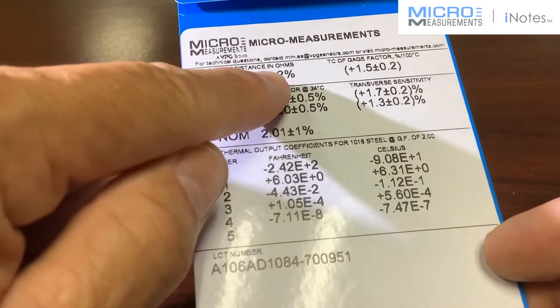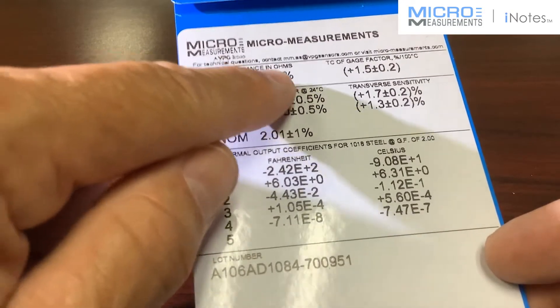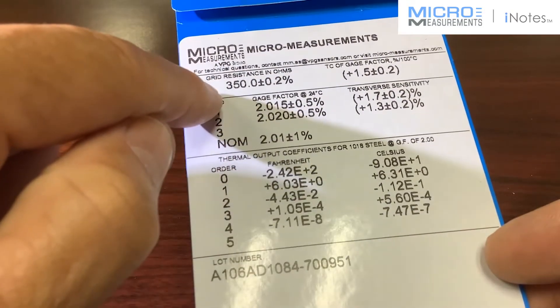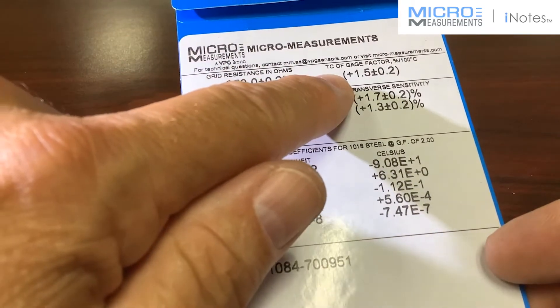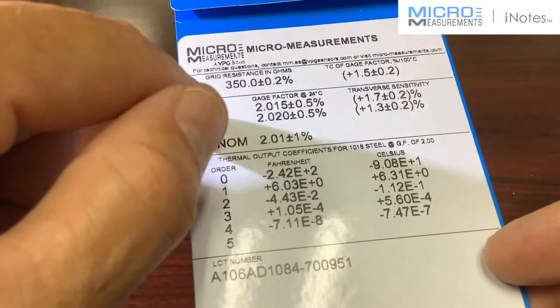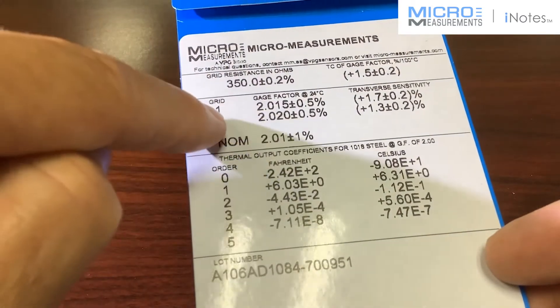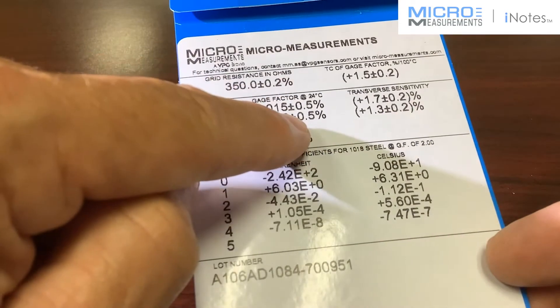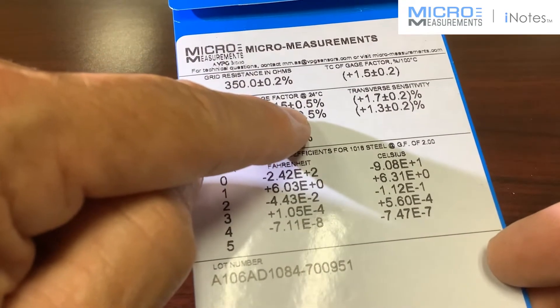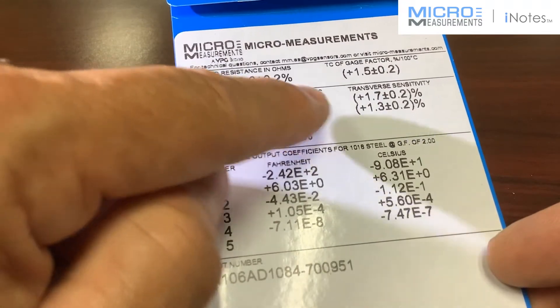We've got the resistance is 350 ohms plus or minus 0.2%, and that's even tighter than what the traditional CEA series gauges would be. You've got the temperature coefficient of gauge factor, 1.5% for 100 degrees C. You've got gauge factors for the two separate grids with a half a percent tolerance, which is typical for what we would have offered with the traditional gauges.